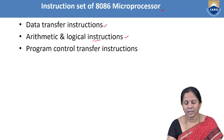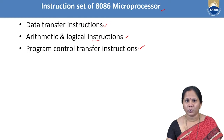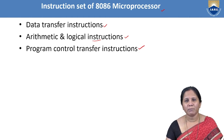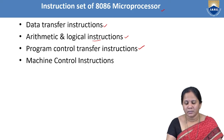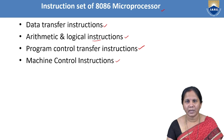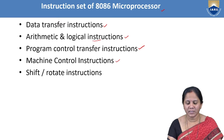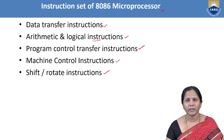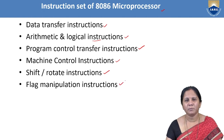The next classification is program control transfer instructions, which are used to transfer control to a specified address. We discussed conditional and unconditional instructions. After that, machine control instructions were covered, including halt, wait, and NOP. We also examined shift and rotate instructions — shift left, shift right, rotate left, and rotate right, both including and excluding carry.